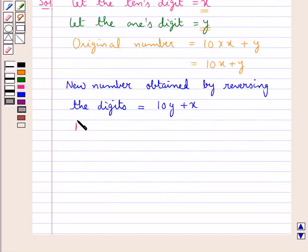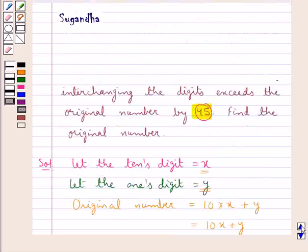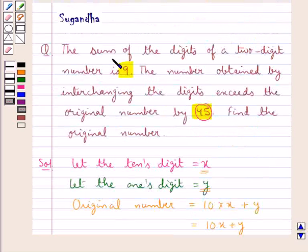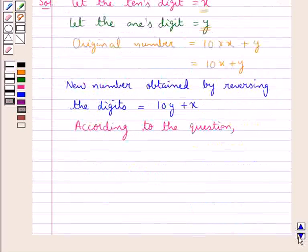Now let's see what conditions are given to us in the question. The sum of the digits is 9, and the digits are x and y. So our first condition is x plus y is equal to 9. Let this be equation 1.